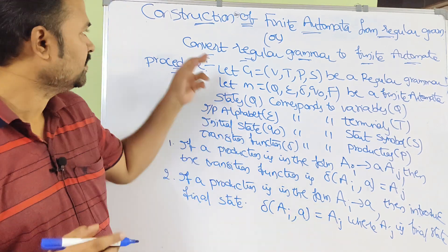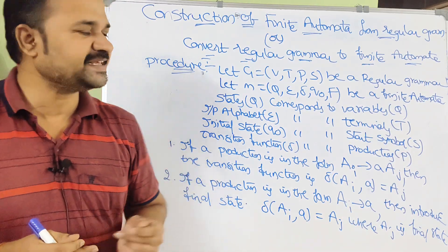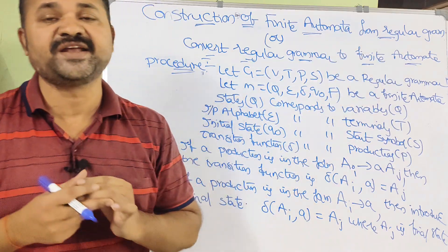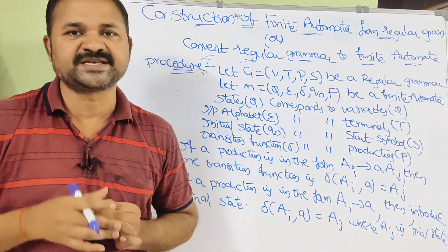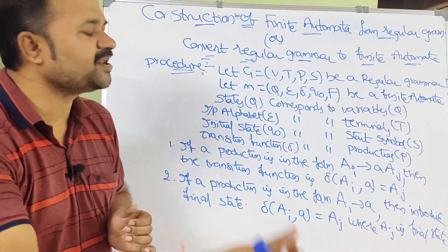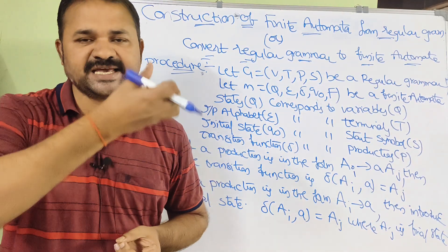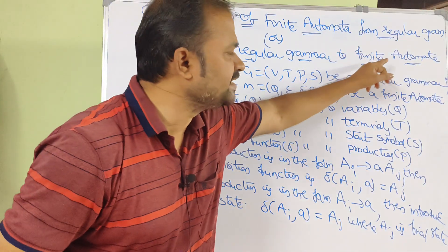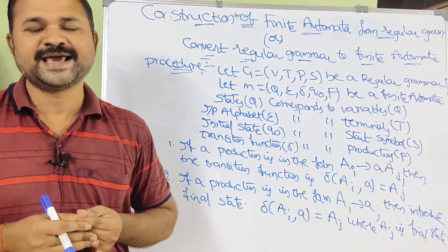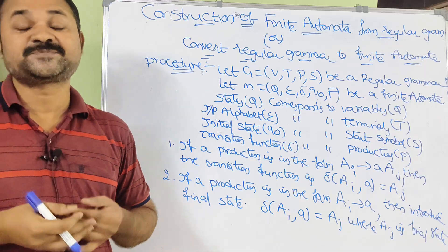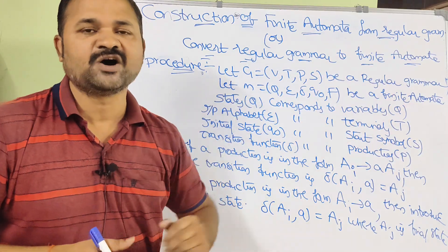Let us discuss the construction of finite automata from regular grammar, that is, converting regular grammar to finite automata. In this video we will discuss the procedure as well as two examples to convert regular grammar into finite automata. The input is a regular grammar — a set of productions — and the output is finite automata.